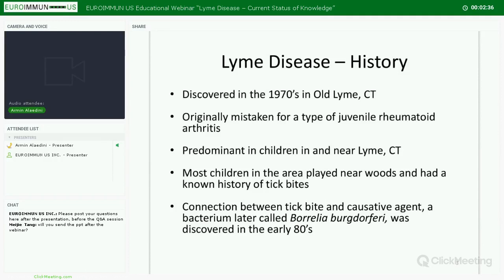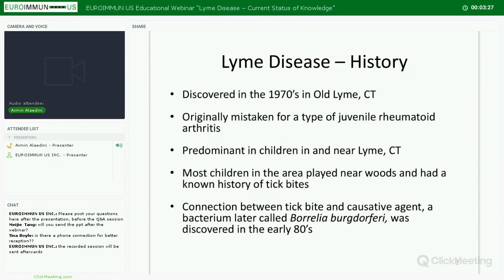Lyme disease has been around for a very long time, but we identified it as an infection and knew about its causative agent only recently. It was discovered in the 1970s in Old Lyme, Connecticut — hence the name Lyme disease. It was originally mistaken as a type of juvenile rheumatoid arthritis, initially thought to be due to a viral infection, and was predominant in children near Lyme who had a history of playing near woods and tick bites. The connection between tick bite and the causative bacterium Borrelia burgdorferi was made in the early 1980s by a scientist named Willy Burgdorfer, which is where the name Borrelia burgdorferi comes from.